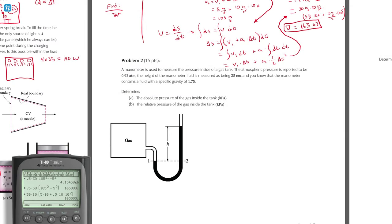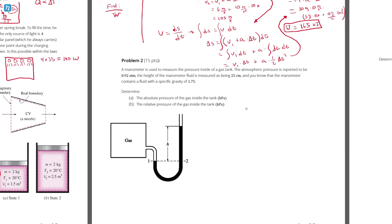Problem number two. A manometer is used to measure the pressure inside of a gas tank. The atmospheric pressure is reported to be 0.92 atmospheres. The height of the manometer fluid is measured as being 25 centimeters, and the manometer contains a fluid with a specific gravity of 1.75.